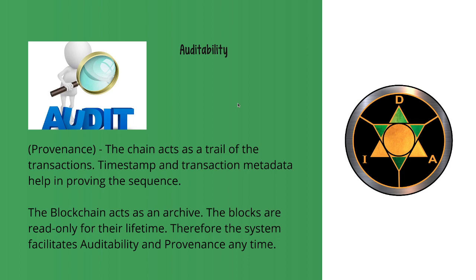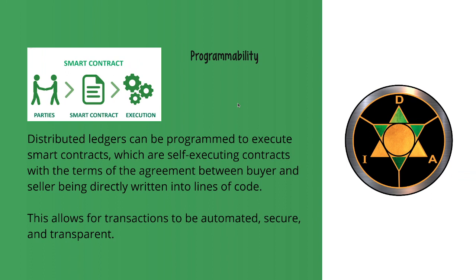This brings some level of facility in auditability and also indicates where the transaction comes from at any time, assuming that we add some metadata to the transactions at the time of construction. Lastly, an emerging characteristic that is really interesting is programmability, commonly called smart contracts — simply a piece of software that can live on the distributed ledger technology. These smart contracts get the same characteristics that distributed ledger technologies exhibit, such as immutability and auditability.